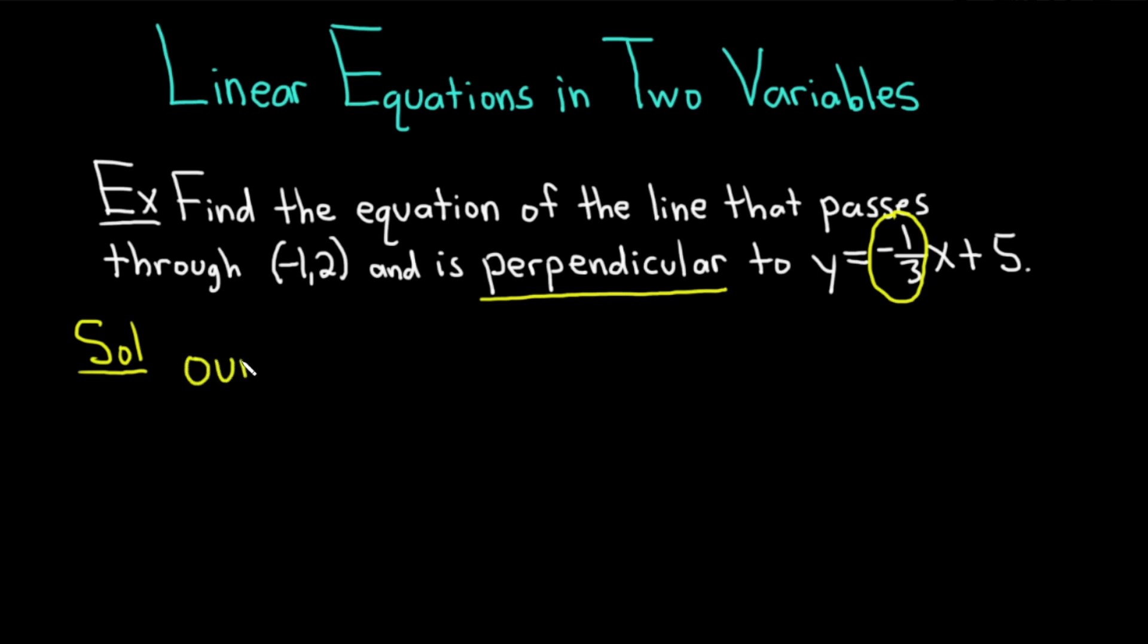So our slope is just the negative reciprocal. You basically flip it and put a negative sign. It's going to become 3. Whenever it's perpendicular, you just take the slope of that line, flip it, and put a negative.